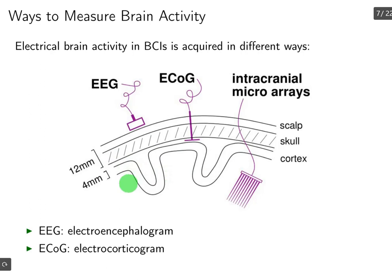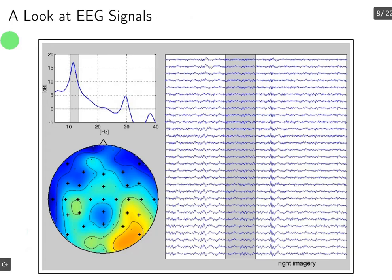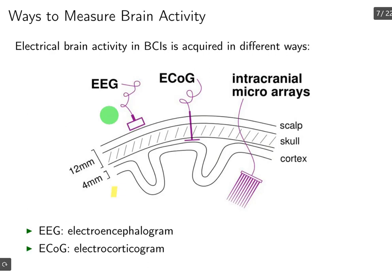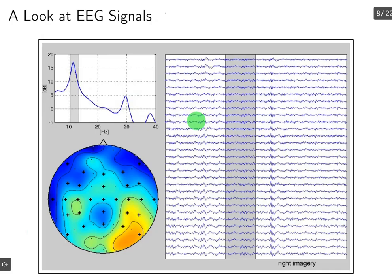The approximate length of the scalp and skull including other matter is around 12 mm. The surface of the cortex where most neurons are located is 4 mm — this is the so-called gray matter of the brain. Under that we have white matter. Here we can take a look at sample EEG signals recorded from the surface of the brain. It is a totally non-invasive way of measuring brain activity, while ECoG and intracranial microarrays are invasive because they must penetrate or go through the scalp.